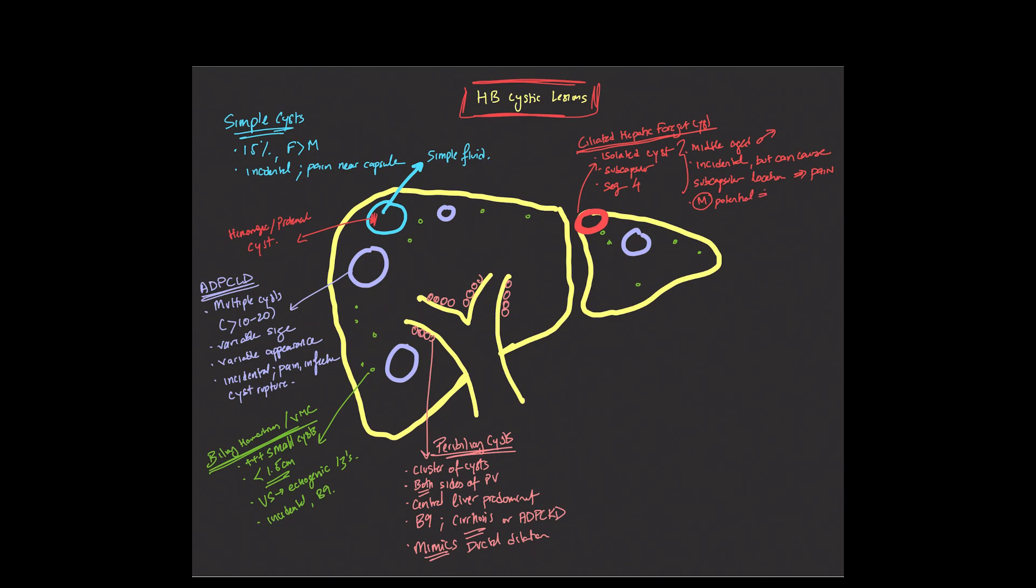Importantly, this does have malignant potential. It can undergo transformation to squamous cell cancer. It's exceedingly rare. There are case reports, but it has been reported. And as a result, if you are suspecting this, you may want to sample it. If it comes back as ciliated hepatic foregut cyst, patients should undergo resection.